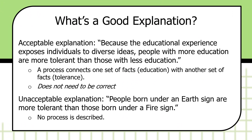Unacceptable explanations lack process. For example — and this is silly on its face, but it makes the point — 'people born under an earth sign are more tolerant than those born under a fire sign.' What makes this unacceptable is that it's not testable, and more than that, it doesn't have a process. There's no process implied. When you construct explanations for phenomena, you should always think about the process: how does one set of facts cause another set of facts?